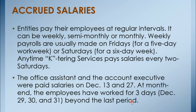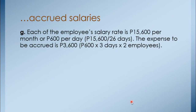At month end, the employees have worked for three days — December 29, 30, and 31 — beyond the last pay period. They were already paid on December 13 and 27; however, those three days from December 29 to 31 have not yet been paid by the company. Each employee's rate is 15,600 pesos per month, or 600 pesos per day (15,600 divided by 26 days). The expense to be accrued is 3,600 pesos (600 times three days).